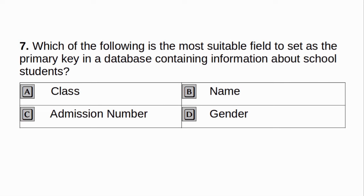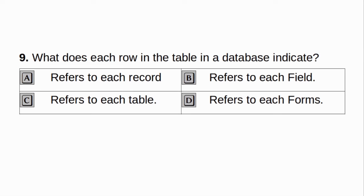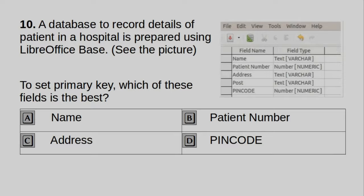Which of the following is the most suitable field to set as the primary key in a database containing information about school students? A. Class. B. Name. C. Admission number. D. Gender. Answer: C. Admission number. Which of the following can be done using the form tool in LibreOffice Base? A. Can enter data into it. What does each row in the table in a database indicate? A. Refers to each record. B. Refers to each field. C. Refers to each table. D. Refers to each form. Answer: A. Refers to each record.